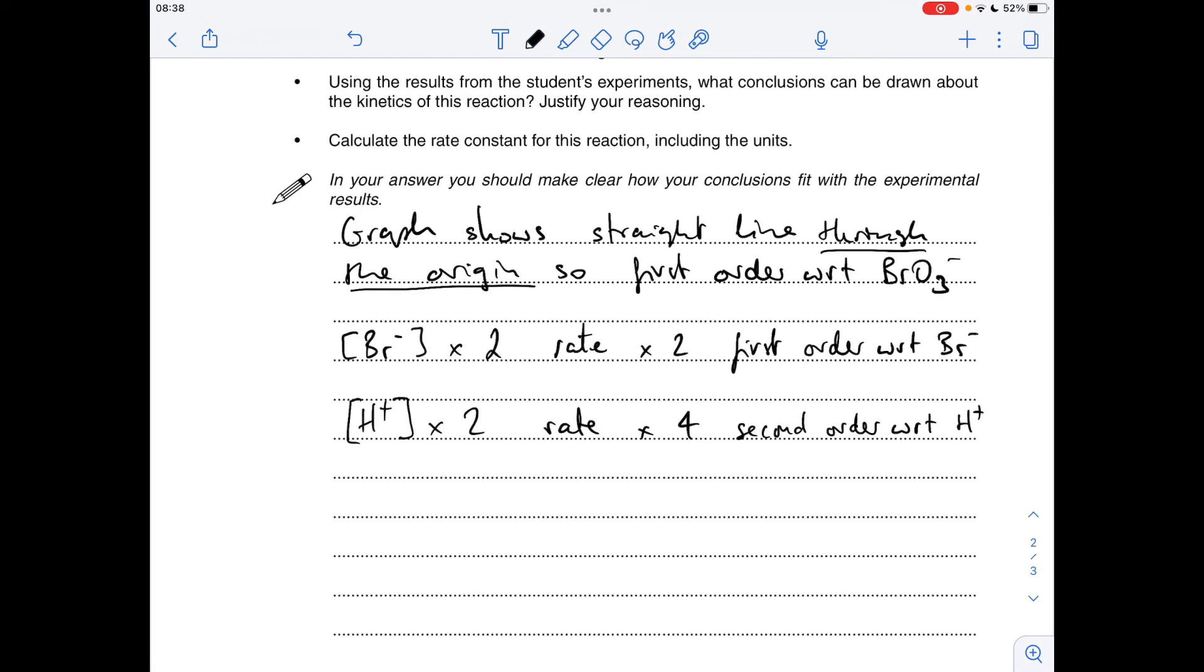So the rate equation is going to look like this. And if we rearrange for k, we get rate over the concentrations. So all I'm going to do now is substitute in a row of results.